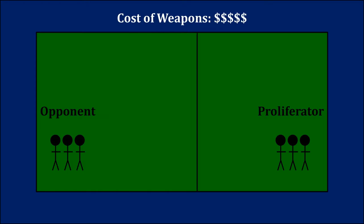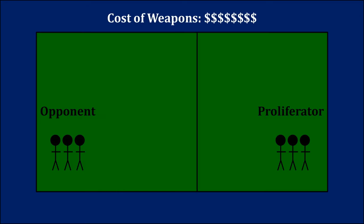However, if the cost of nuclear weapons is sufficiently high, the potential proliferator would have no interest in building them — the cost of the investment simply is not worth the ultimate benefit. In those situations, the potential proliferator has no credible threat to build weapons, and the opponent is not going to offer concessions based on that. If there is no threat, the opponent has no reason to give any concession. As a result, if we increase the cost after some point, the settlement implemented remains the same, because the opponent is no longer basing the terms off the proliferator's ability to produce nuclear weapons.